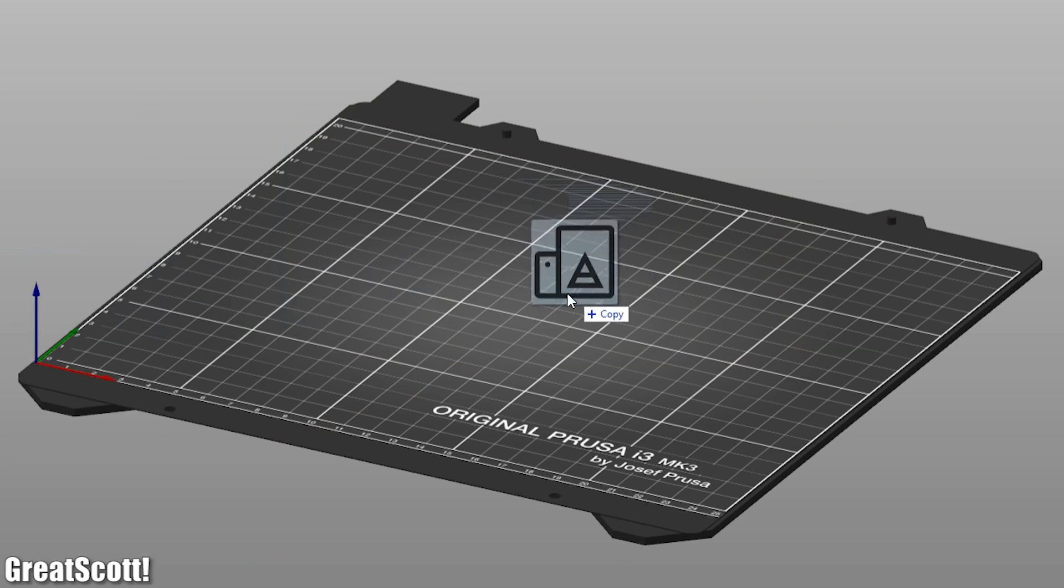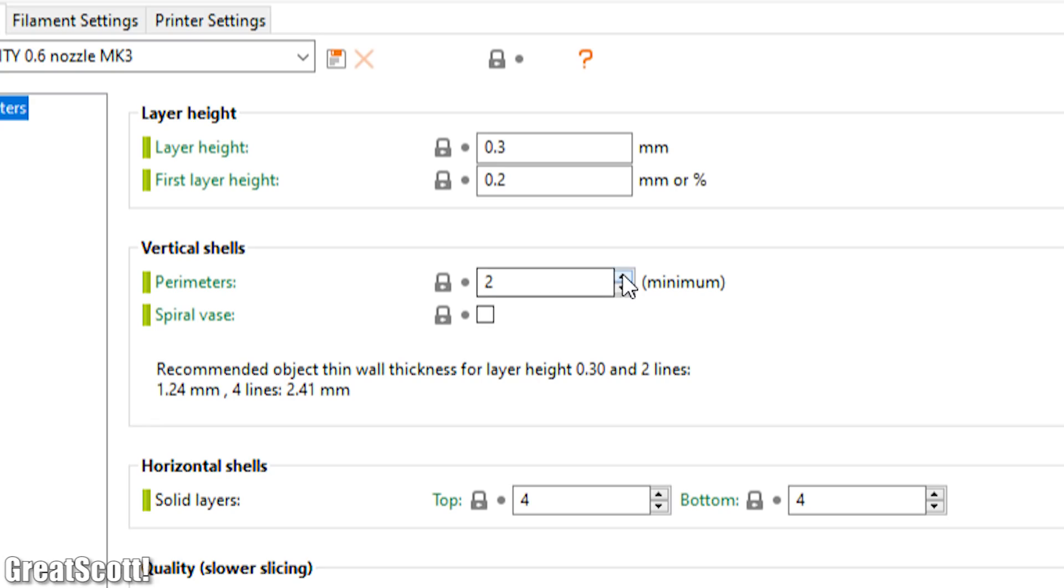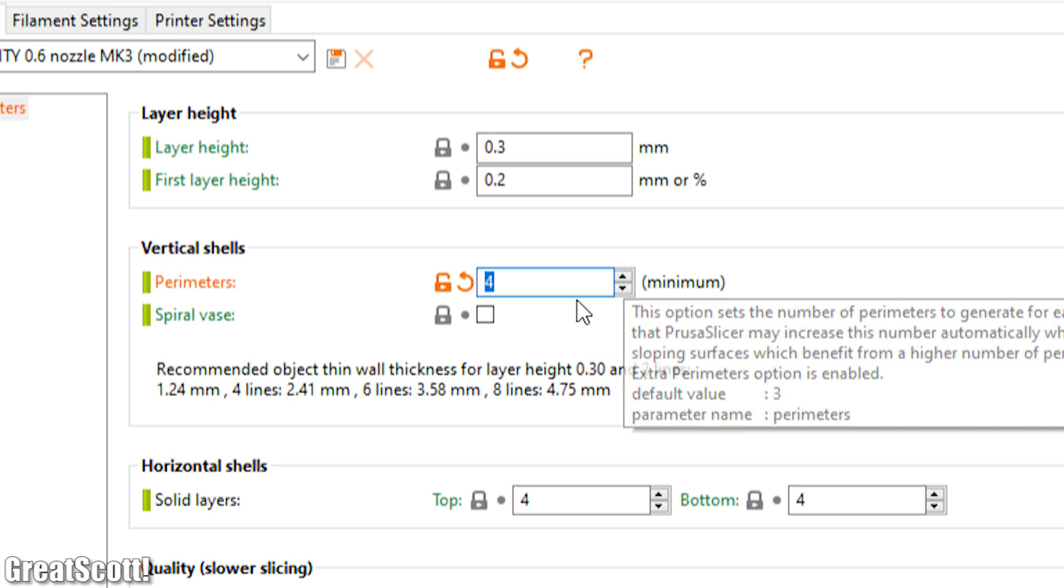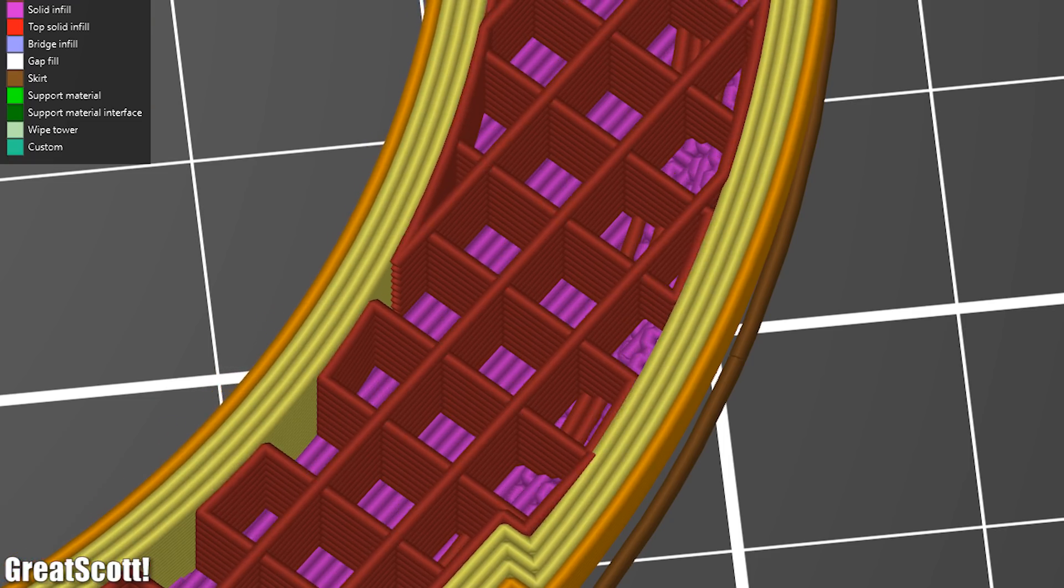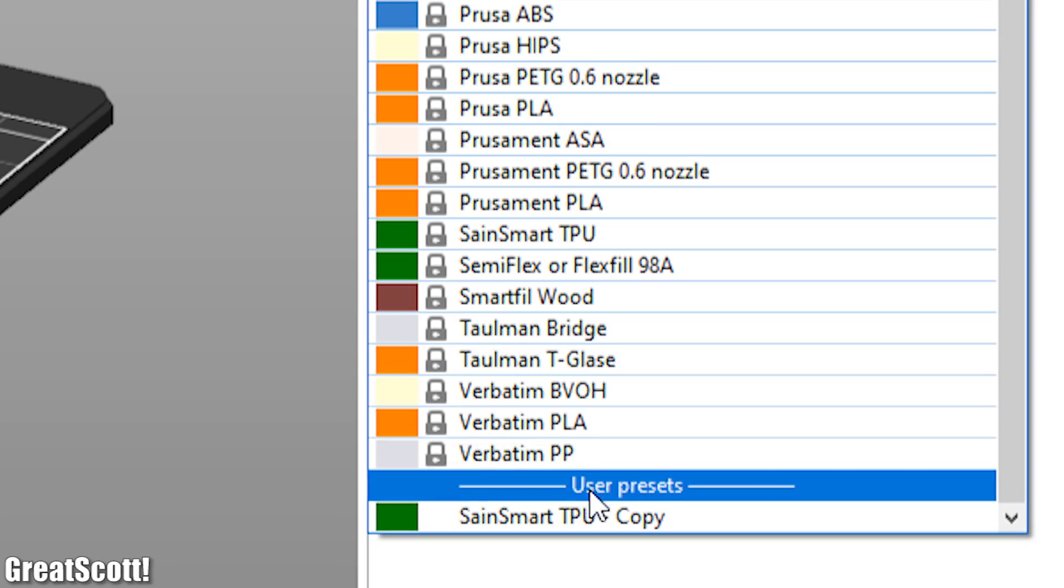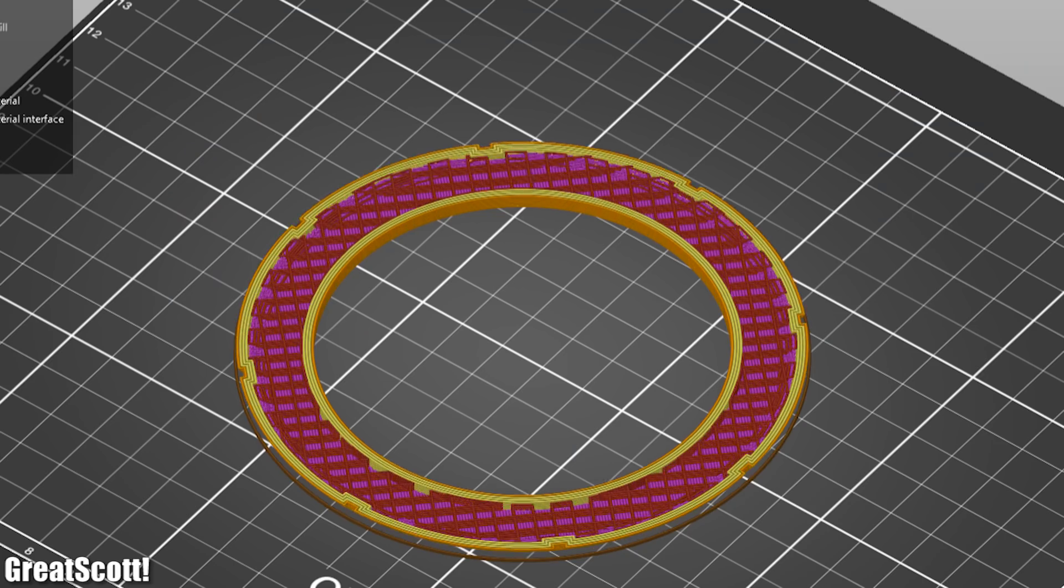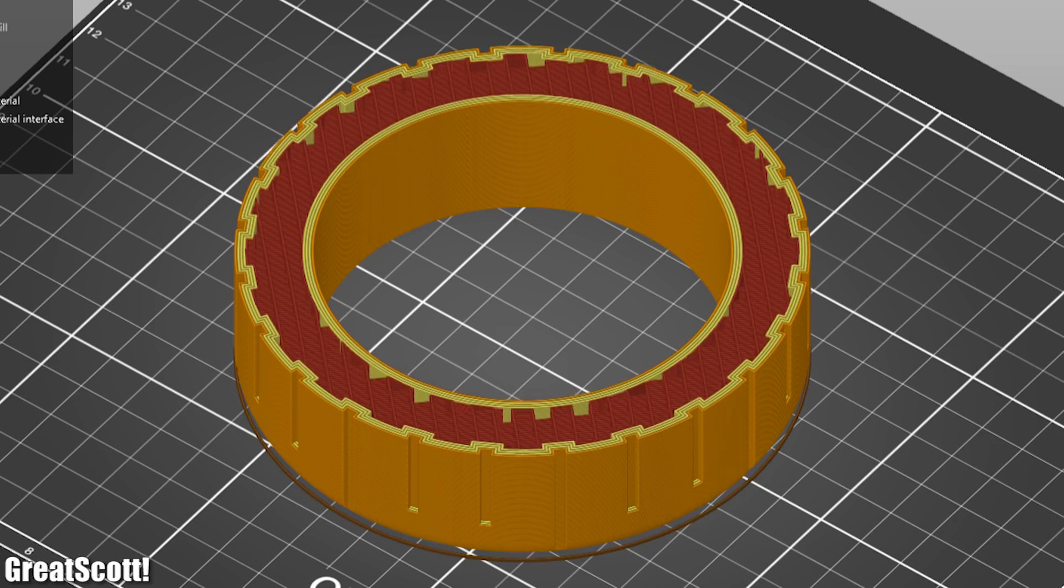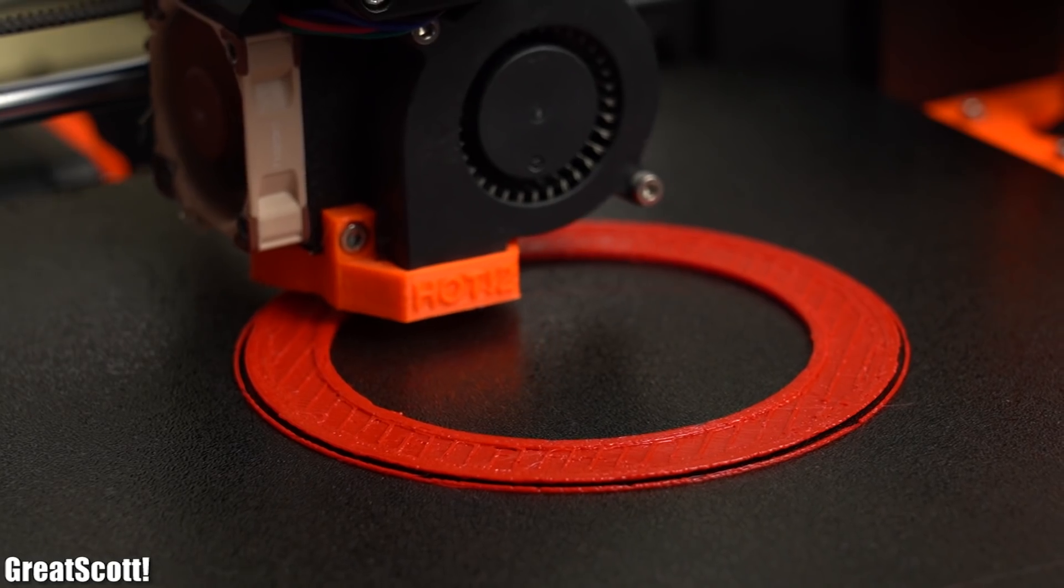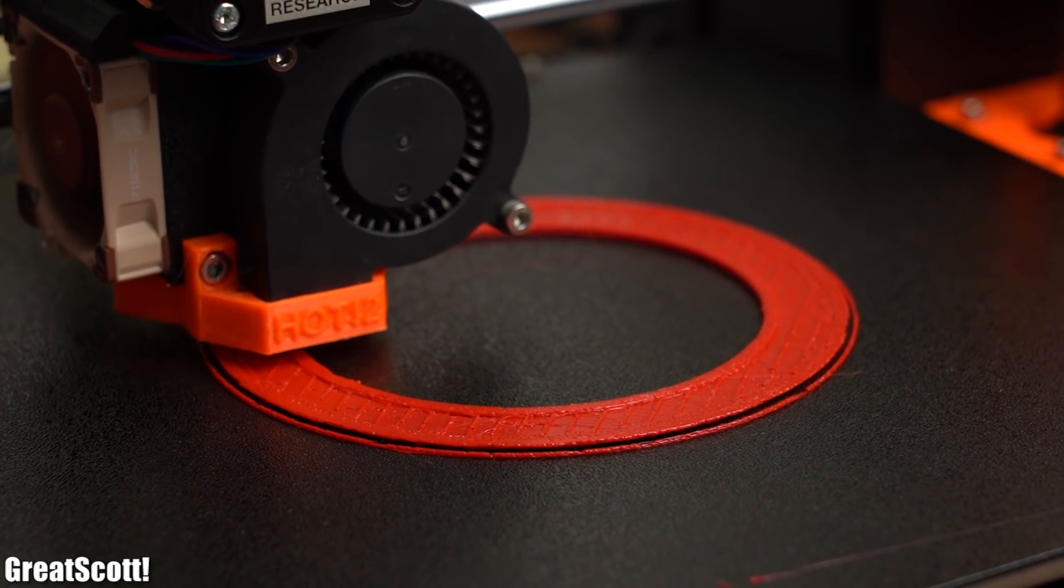So it was time to import the model into the Prusa Slicer software in which I increased the parameter value to 4 in order to get thicker and thus stronger walls for the print. For the filament settings I firstly tried using Semi Flex or Flexfil 98A and after slicing the model successfully with an infill of 15% it was finally time for 3D printing which did not work out ideally.